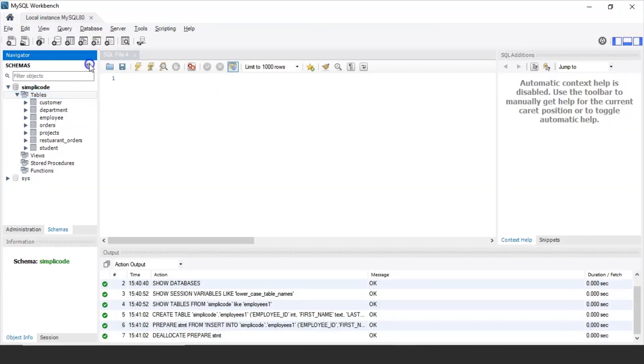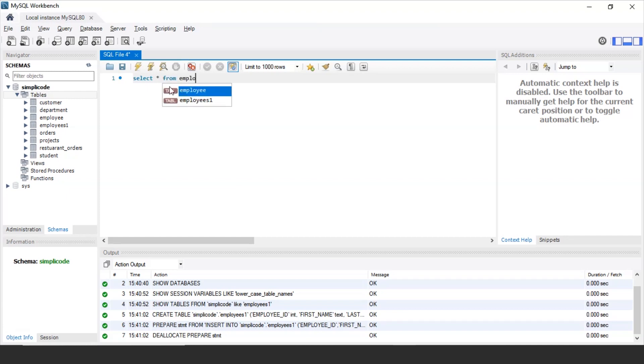So let me just refresh the schema here and as you can see employees1 has been shown in the table section. So let me just display the records that are present in this table. For that I'm using the SELECT statement. SELECT star FROM employees1.